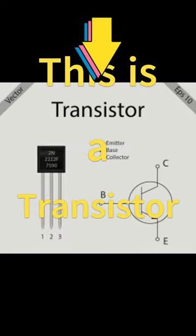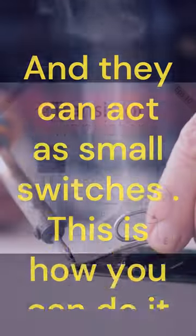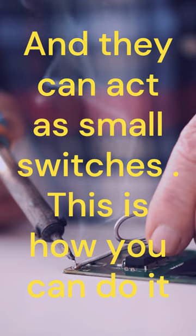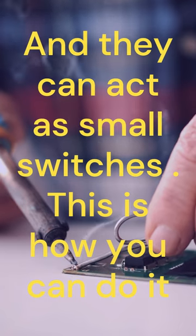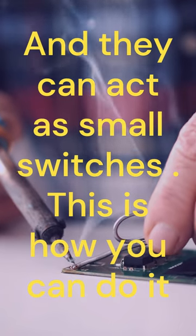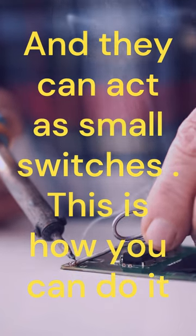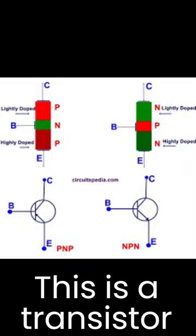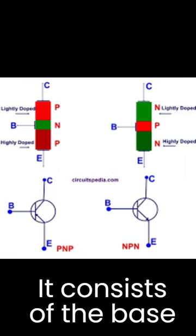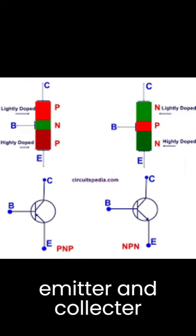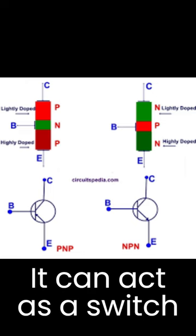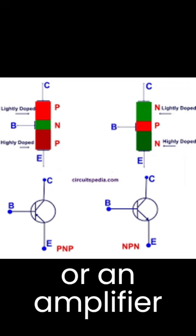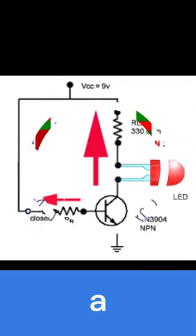This is a transistor, and it can act as a small switch. The transistor consists of a base, emitter, and a collector. It can act as a switch or an amplifier.